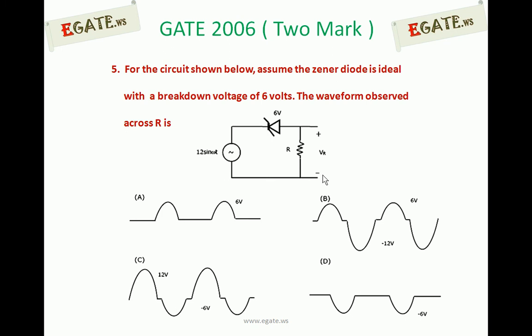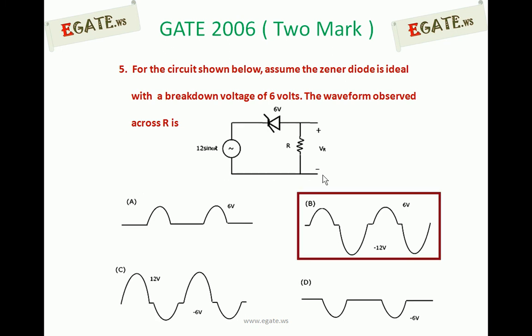The correct answer for this question is B. The positive maximum across the resistor is 6 volts, and the negative maximum across the resistor is minus 12 volts. We will see the details now.